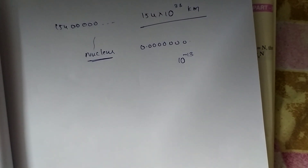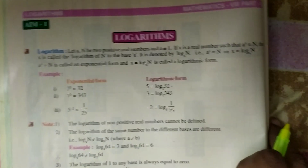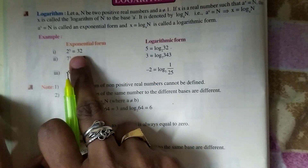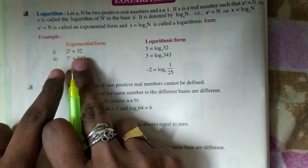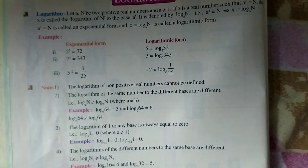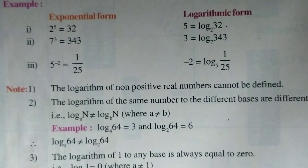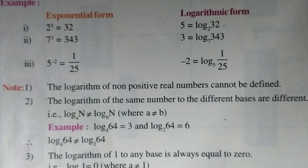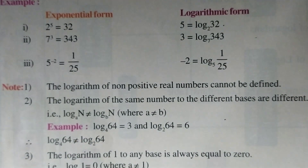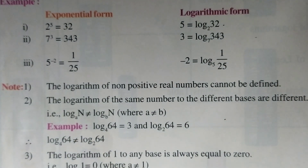A logarithm is another form, or the inverse form, of an exponential. For example, 2 to the power 5 is equal to 32 — this is the exponential form. While in logarithmic form, we write it as: 5 is equal to log 32 base 2. We will see how it comes and what the formats are.